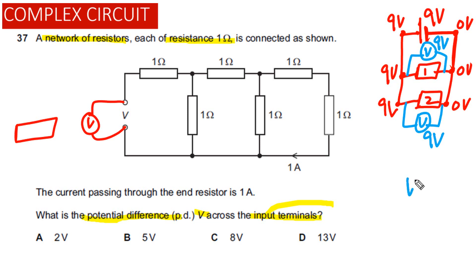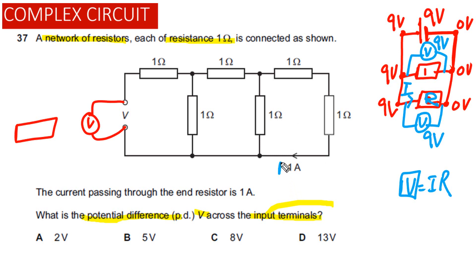The second concept we need to understand is V = IR — Ohm's law. If we have a resistor with resistance R and current I passing through it, the potential difference across it will be equal to V. Now, current passing through this wire is equal to 1 amp, so current passing through this resistor is also equal to 1 amp.